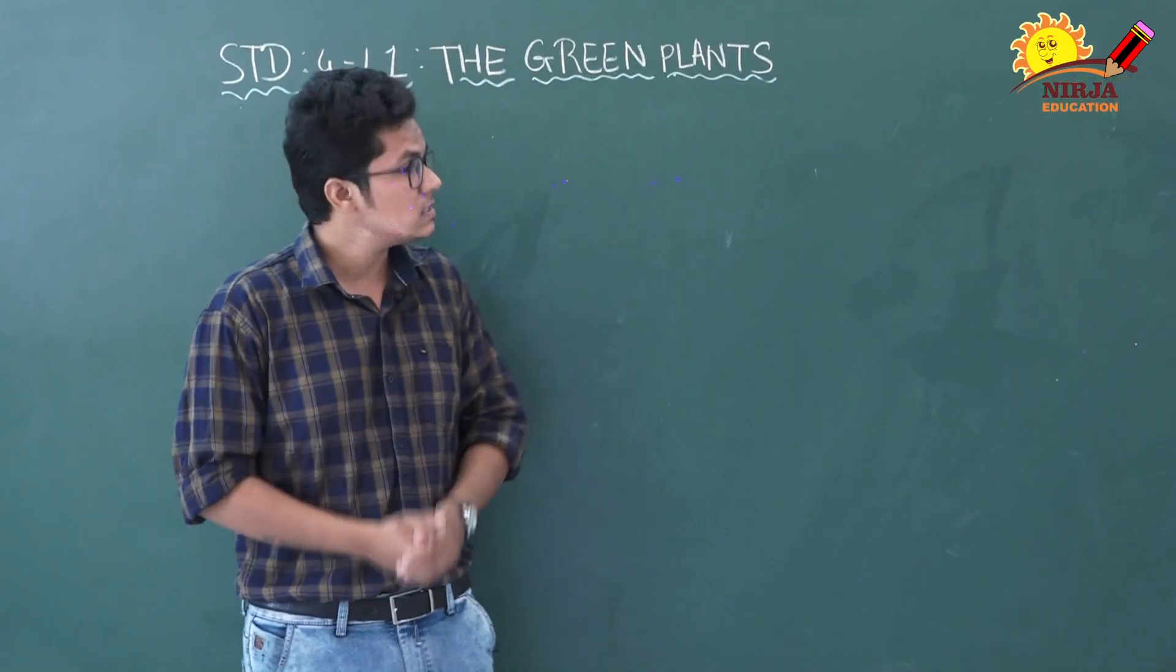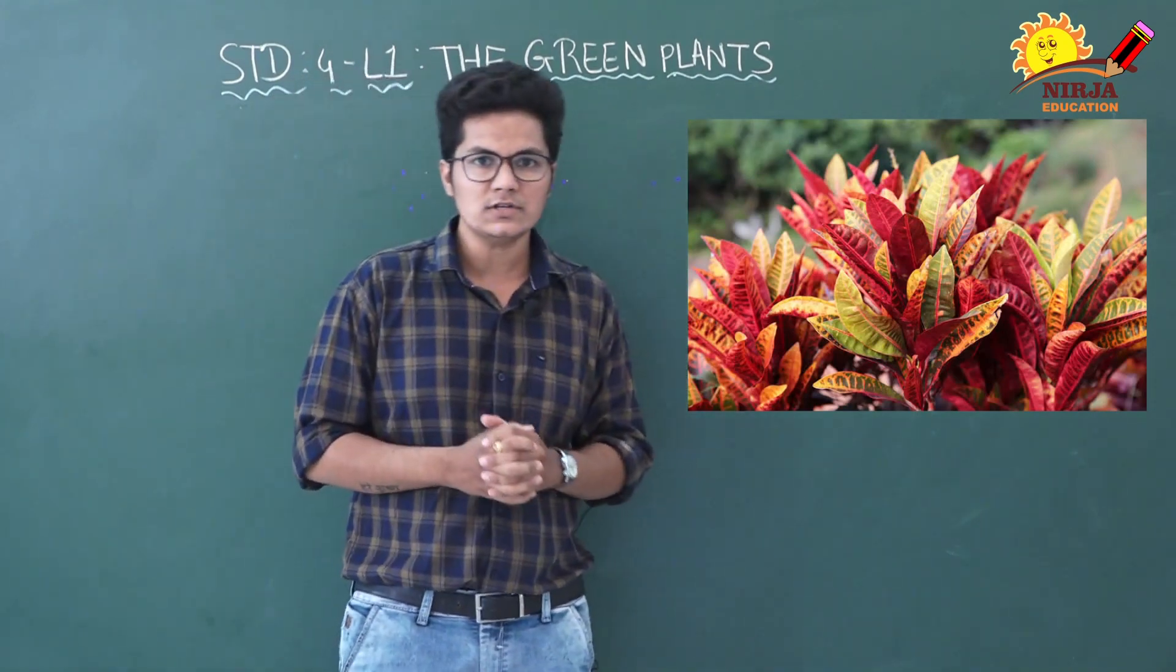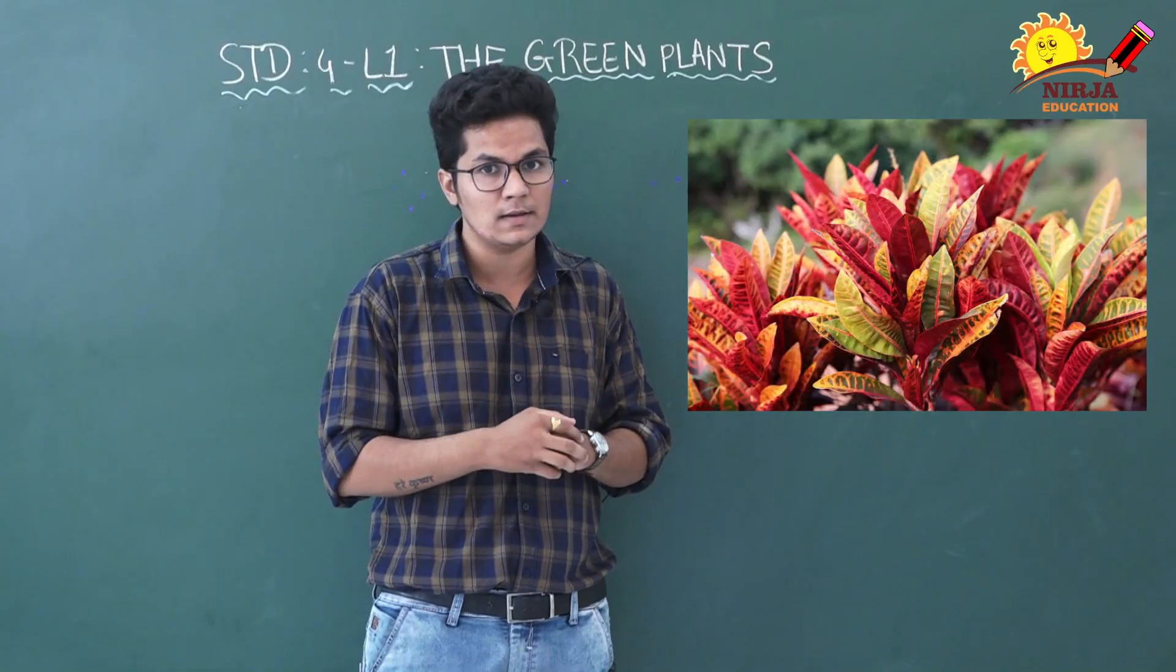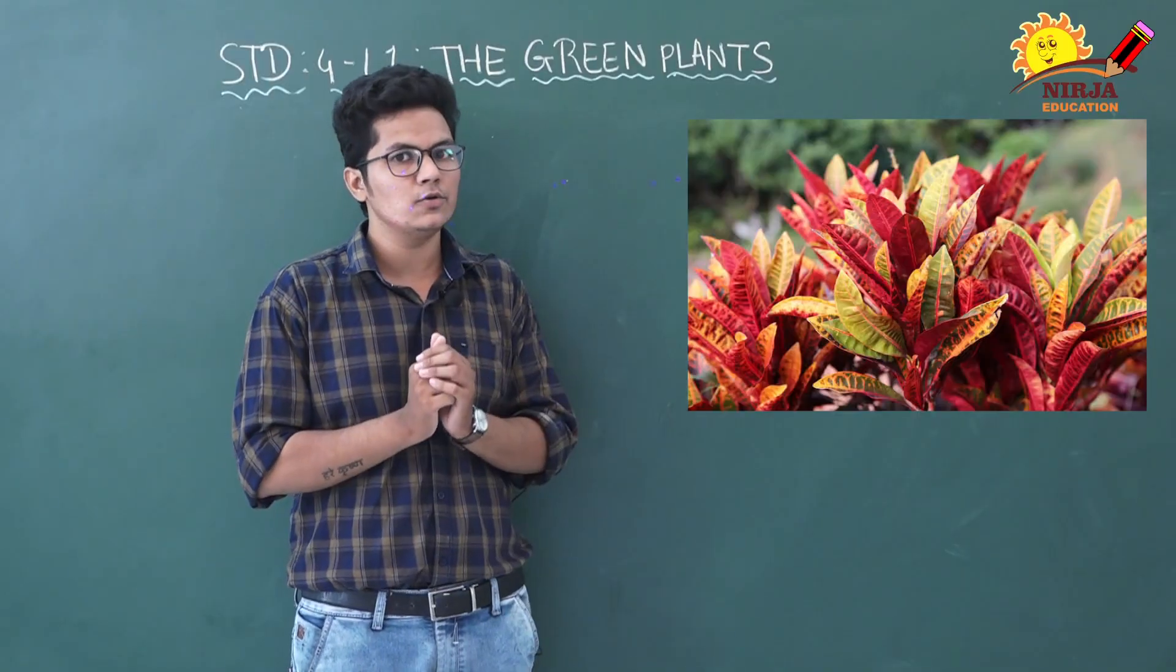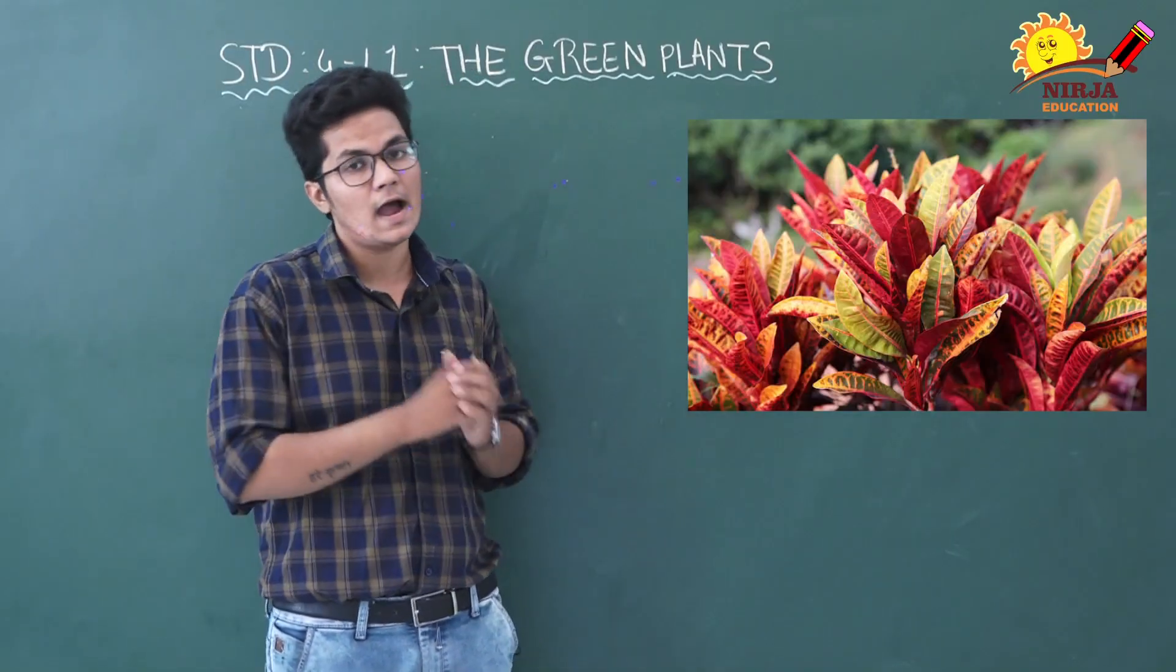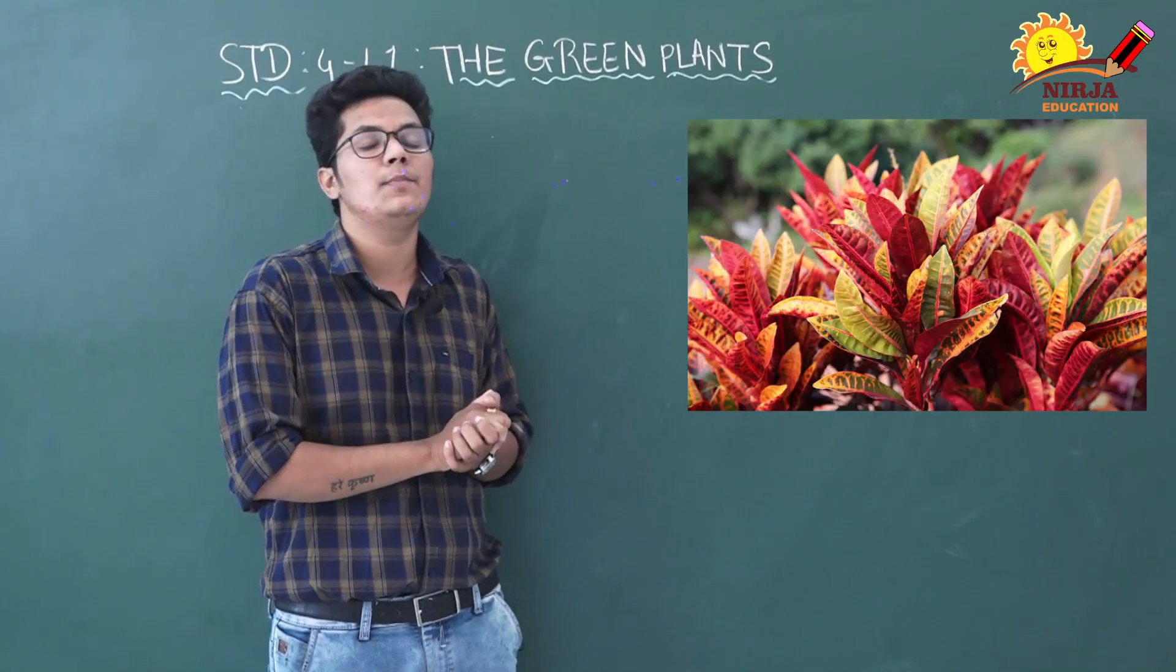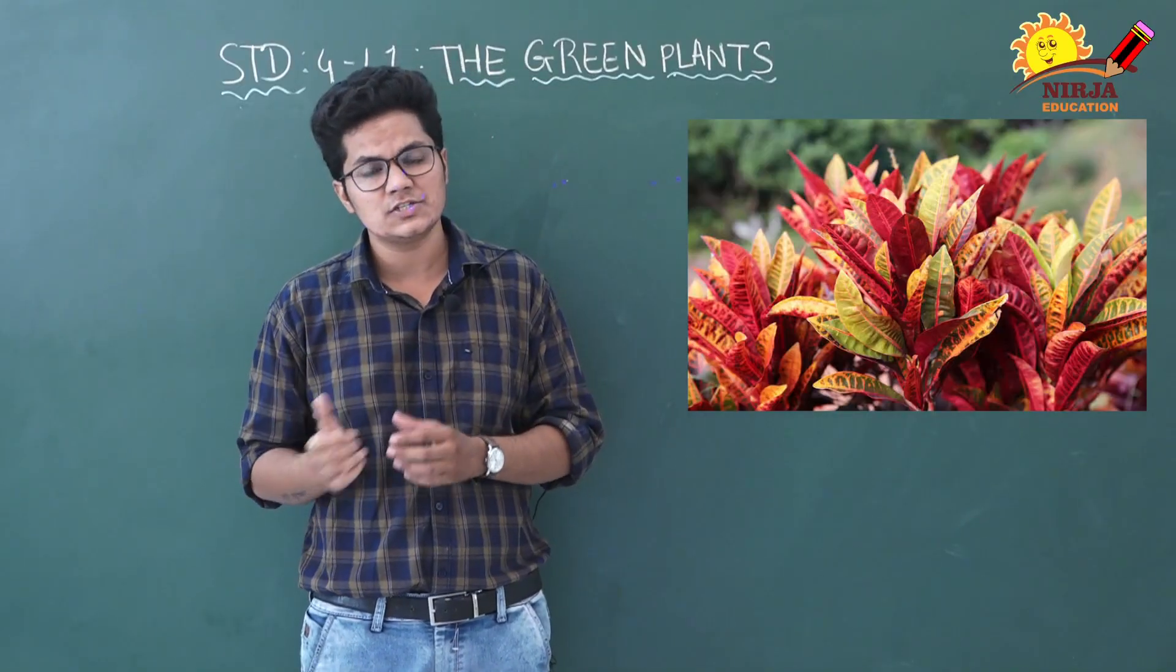Now some plants like crotons have red leaves because of the red pigment in them. That red pigment makes their leaves red. They have chlorophyll too, but the red pigments hide the green color. So does the photosynthesis take place?